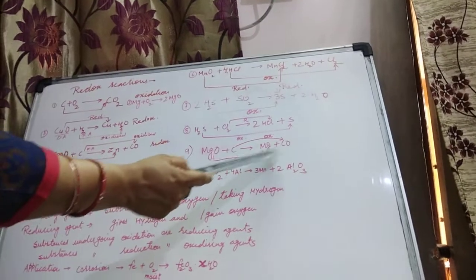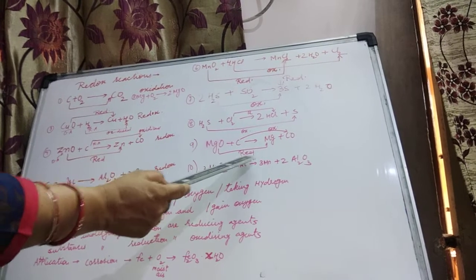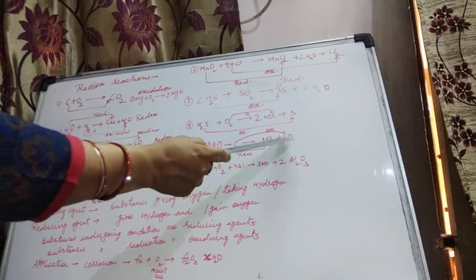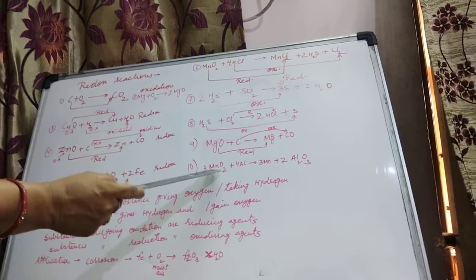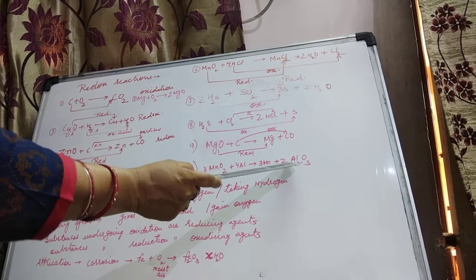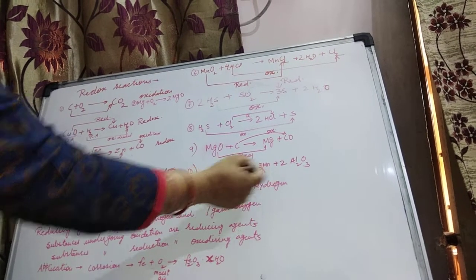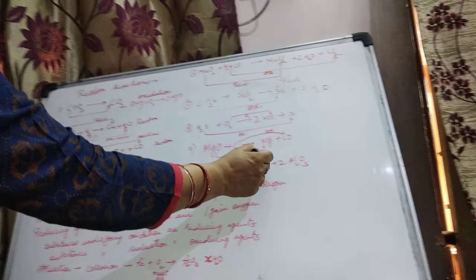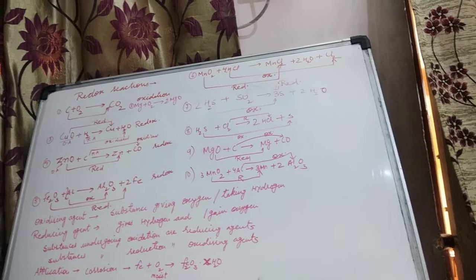MgO plus C gives Mg plus CO. MgO is being converted into Magnesium — Oxygen is getting removed — so the process is Reduction. Carbon is being converted into Carbon Monoxide — Oxygen is being added — so that is Oxidation. Next: MnO₂ reacting with Aluminium gives Mn plus Al₂O₃. MnO₂ to Mn — Oxygen removed — Reduction. Aluminium to Al₂O₃ — Oxygen added — Oxidation. The reaction is Redox.